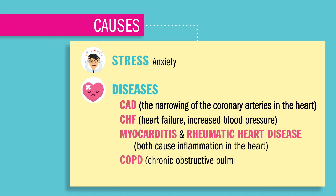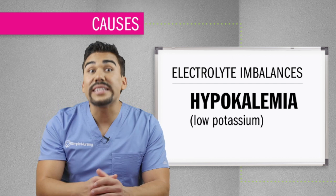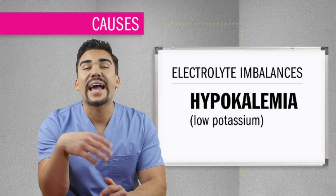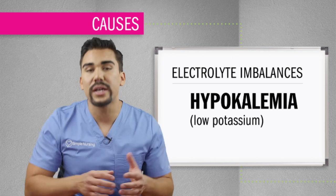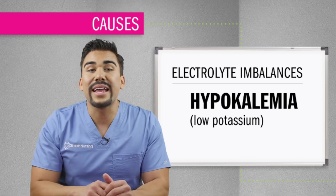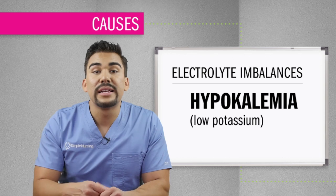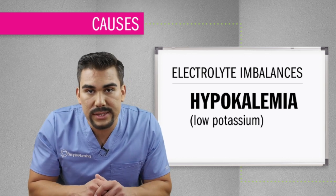And lastly, even COPD, chronic obstructive pulmonary disease, makes it difficult for the body to get oxygen, which basically adds stress to the heart. Also, electrolyte imbalances like hypokalemia, or low potassium, can cause electrical problems like premature contractions.